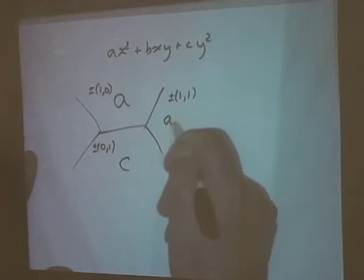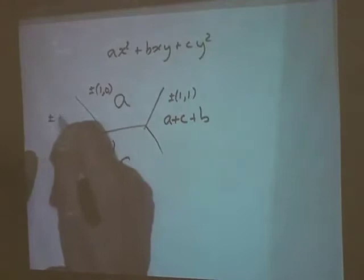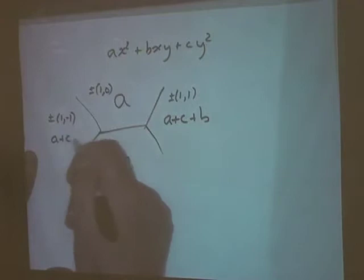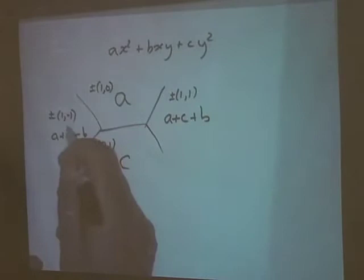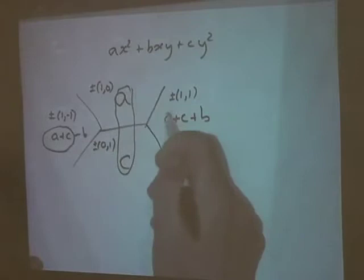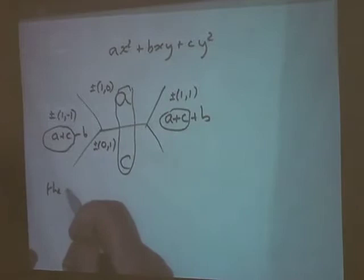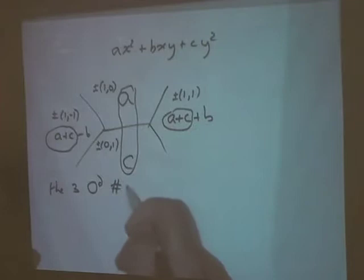The value at (1,-1) is a + c - b. I put a little circle around a+c here, and around a and c, and around a+c again. These three circled numbers — a+c-b, a+c, a+c+b — are in arithmetic progression.